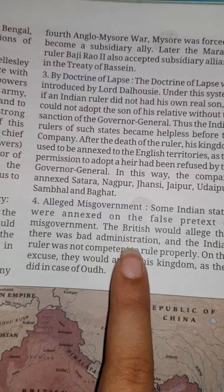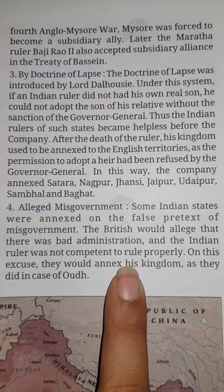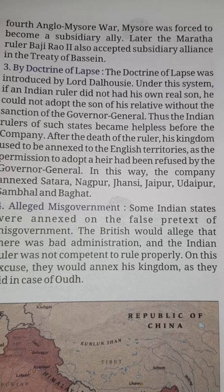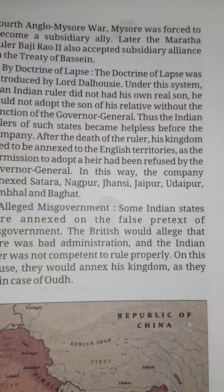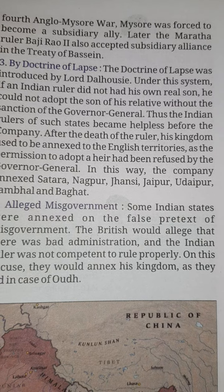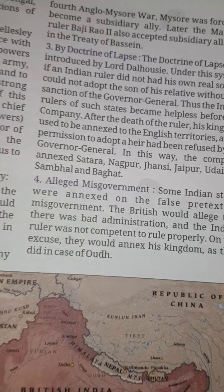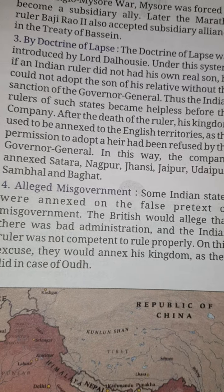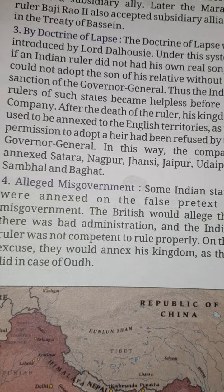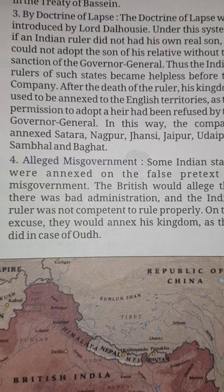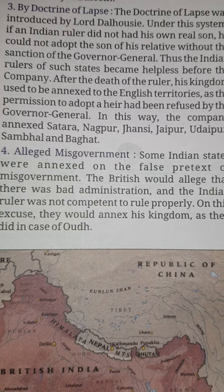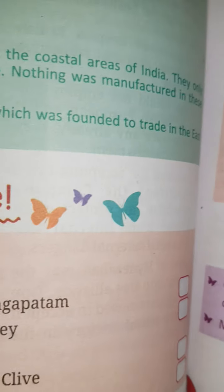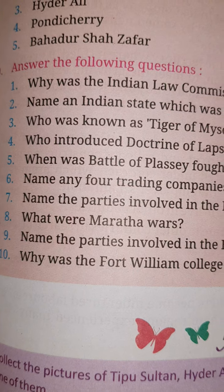So if an Indian state was not governed correctly — if the administration was very poor or bad — the English company could annex and take control over that state. We will complete this history chapter, and in our tomorrow's class we will do the question and answer.